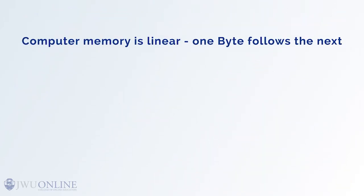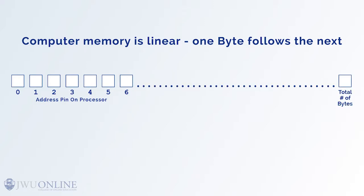In fact, all of computer memory is arranged as a series of linear bytes starting at location 0 and going all the way up to the size of the memory you purchased when you bought your computer. We call this volatile memory or RAM, random access memory.